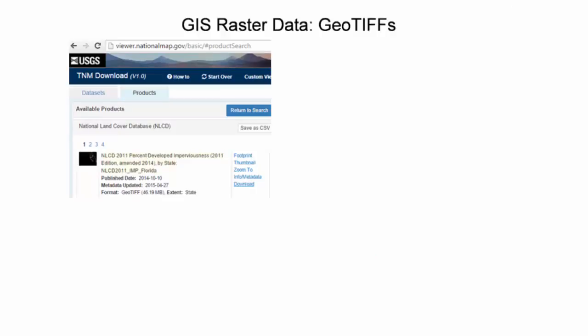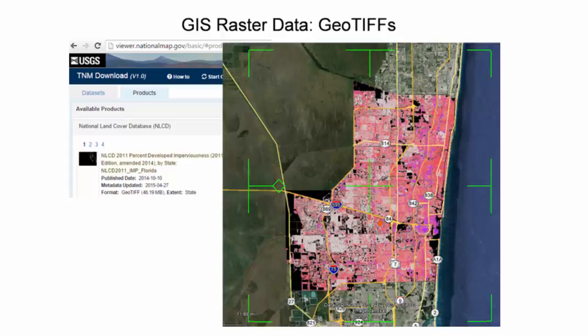In this example, a GeoTIFF of the percentage of developed imperviousness for the State of Florida was downloaded from the National Map Portal operated by the United States Geological Survey, or USGS for short. The file was cropped in ArcGIS to the extents of the urban area in Broward County and imported into Google Earth. The green box allows the user to stretch or move the image, and is available during raster import or by right-clicking the layer in the Panels window and selecting Properties. Since this is a GeoTIFF, the image is tagged with the appropriate georeferencing parameters, so scaling, translating, or rotating the image is not necessary.